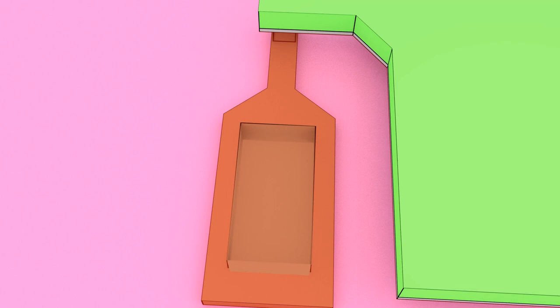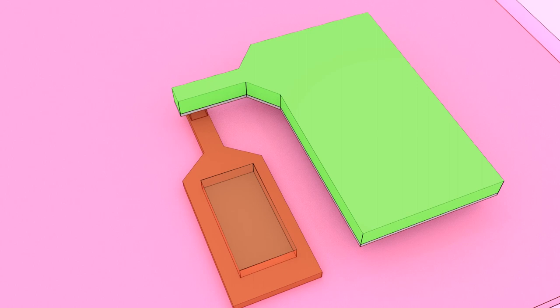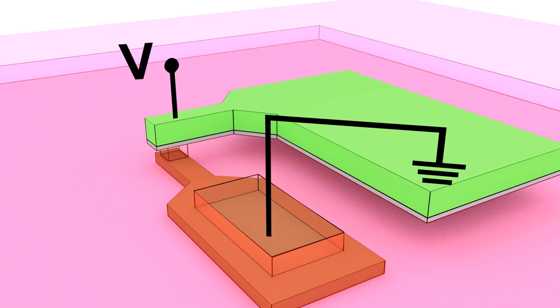The current versus voltage measurements were performed using a semiconductor parameter analyzer. The voltage was applied to the top electrode while the bottom electrode was grounded.